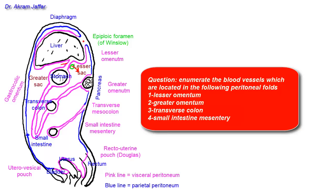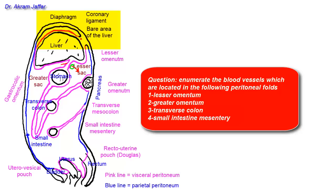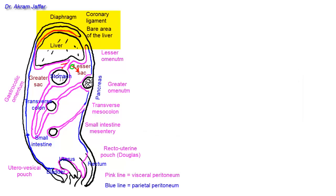Also note that the liver is not completely covered by peritoneum. There is an area called the bare area of the liver where the liver is in direct contact with the diaphragm. This area is located between two folds of peritoneum called the coronary ligament — specifically the superior and inferior layers of the coronary ligament.